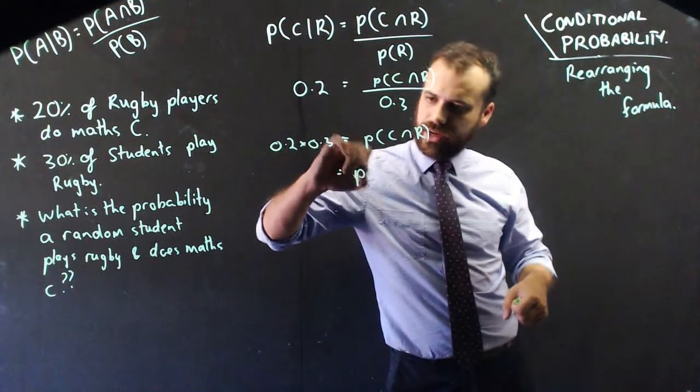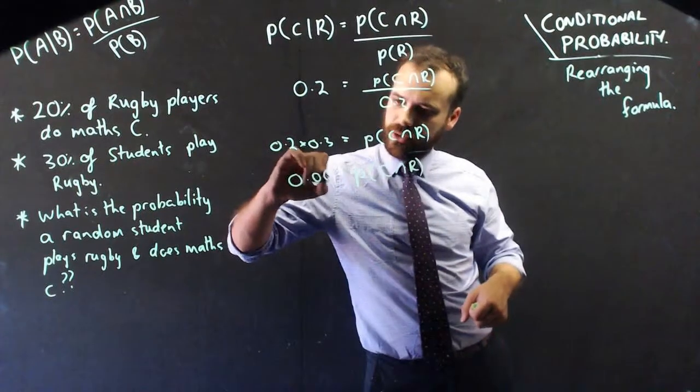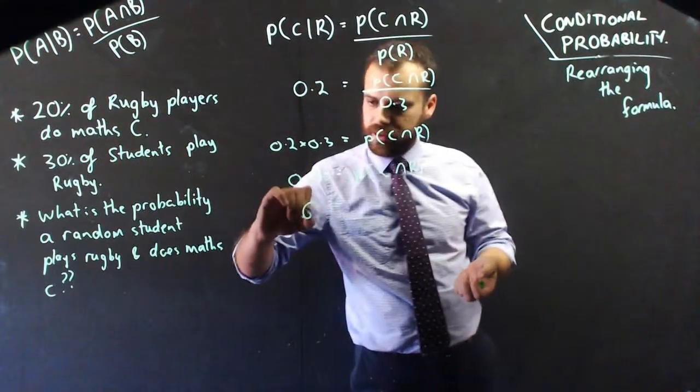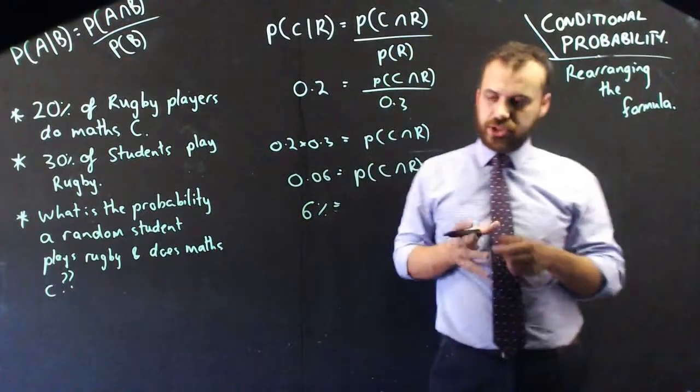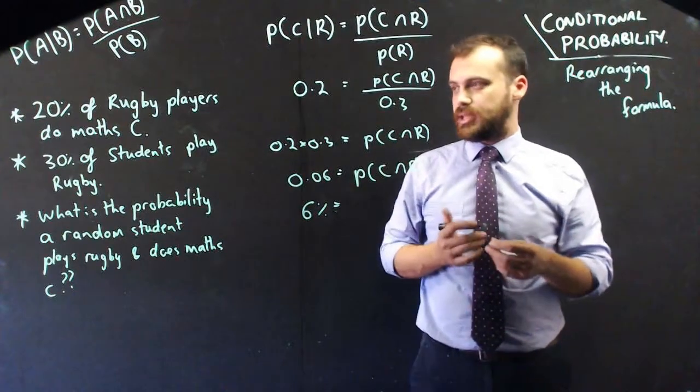So, you can do that on your calculator. That's going to put it at a very small 0.06, or another way of putting it, there's a 6% chance that a student at random plays rugby and does Math C.